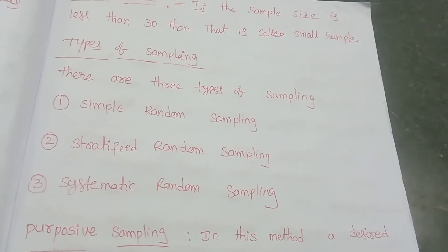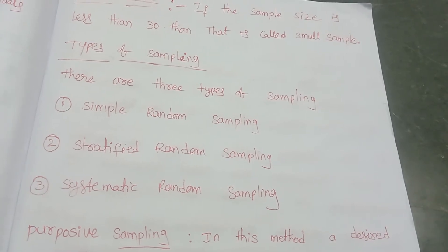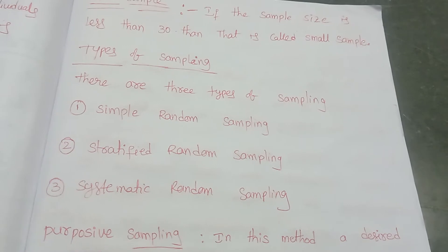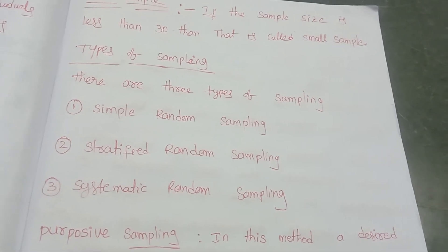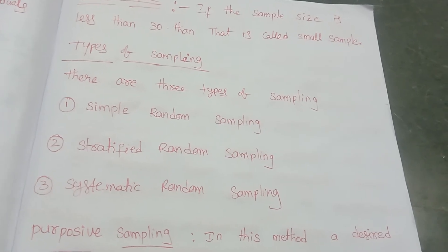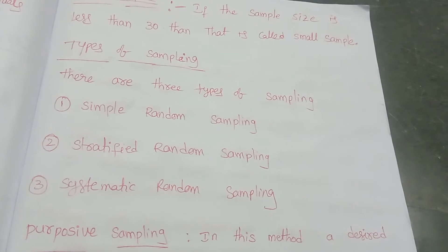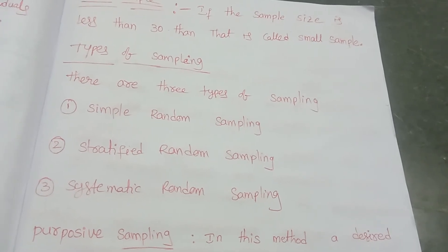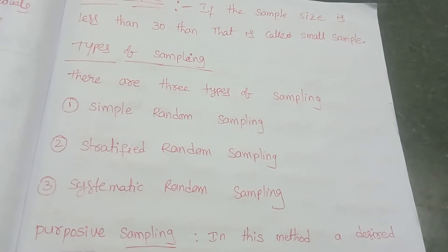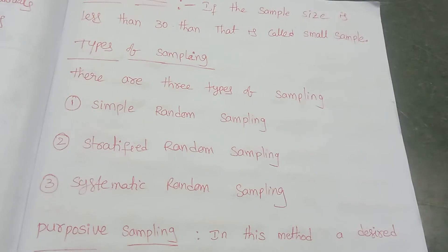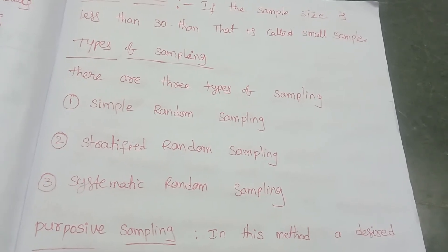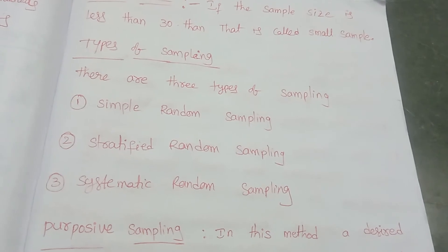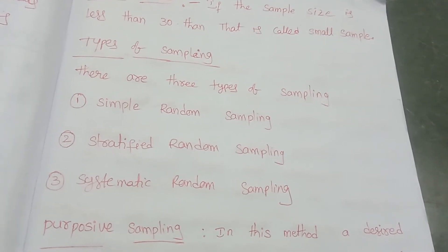Simple random sampling means we are randomly selecting the sample. For example, we use the lottery method — we randomly pick up one number from the lot. We also have the chits method: we number 1 to 55 students, write each number on a chit, shuffle the chits, then randomly pick 10 chits. Those chits are called my sample. That is also called the chits method.